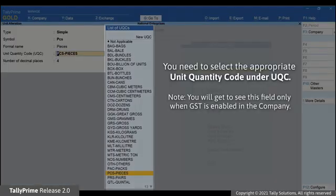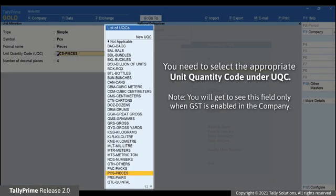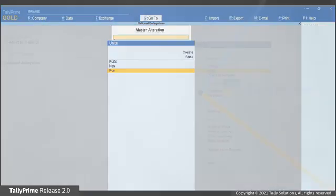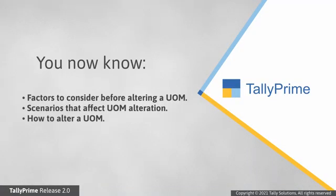Under UQC, or Unit Quantity Code, select the appropriate UQC from the list. So you now know all the factors to be considered before altering a UOM in TallyPrime, the scenarios that affect the process of UOM alteration, and how to alter a UOM in a matter of seconds.